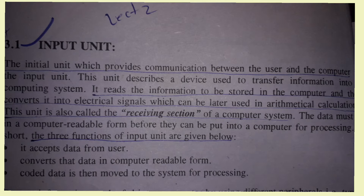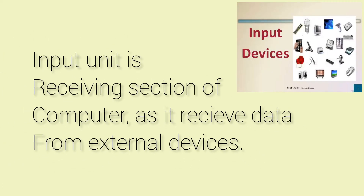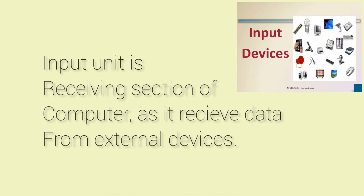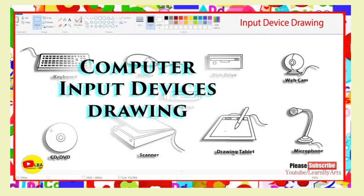How does the input unit work? It reads the information to be stored in the computer and then converts it into electrical signals which can be used in arithmetic calculations. The input unit is also called the receiving section of a computer system because it receives data from external devices like keyboard, mouse, joystick, and camera. These all are input devices which give data to the computer.